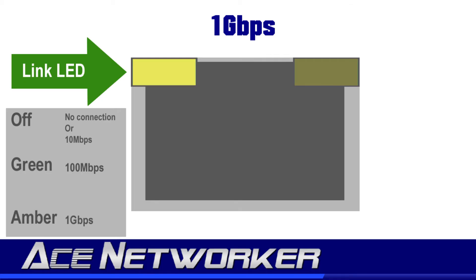If it is off, it may also indicate that this one gigabit per second physical port is only working at 10 megabits per second. If the LED light is on and displaying green, it means there is a connection, it's not administratively down or shut down, and it's passing traffic at 100 megabits per second. And if this left-hand LED light is on and it's amber, it means this one gigabit per second port is passing traffic at its full operating capacity of one gigabit per second.